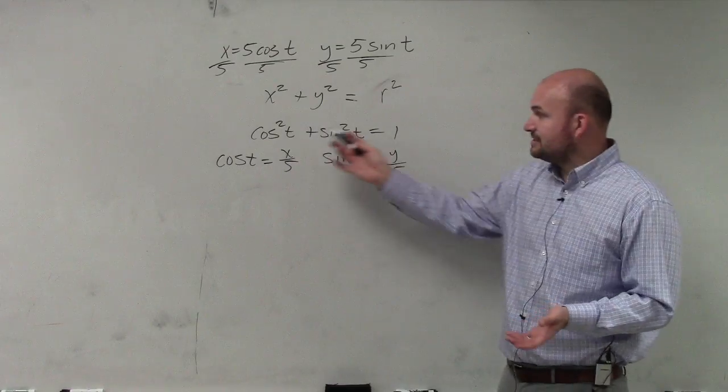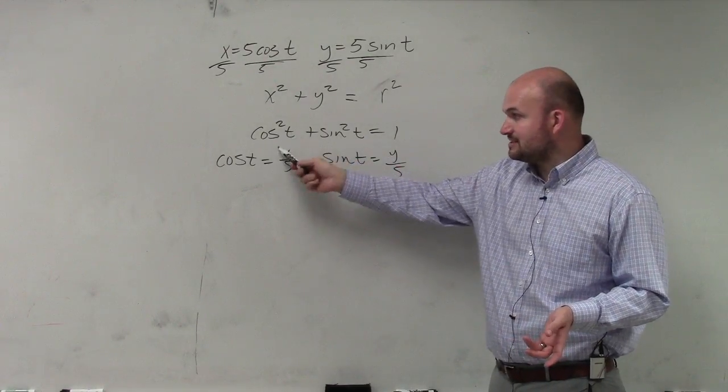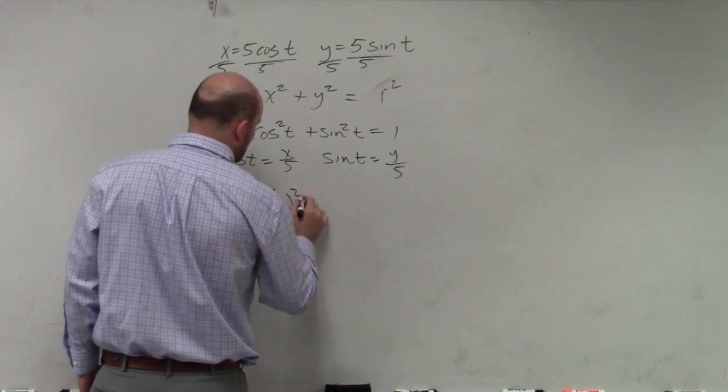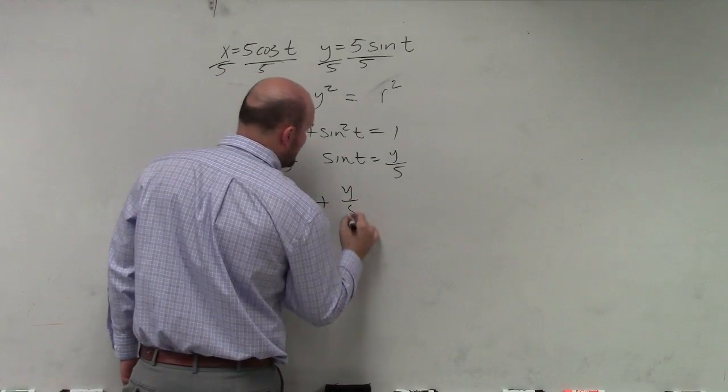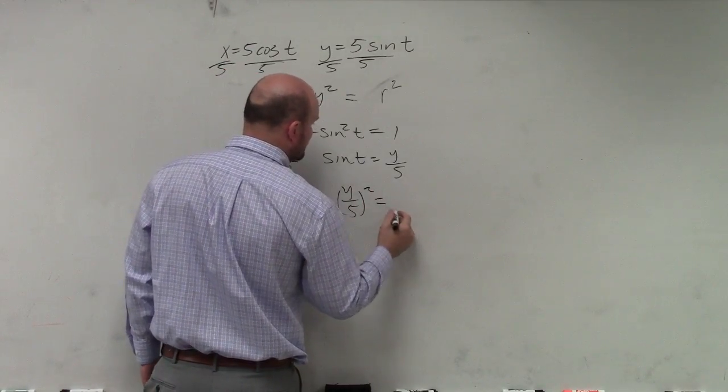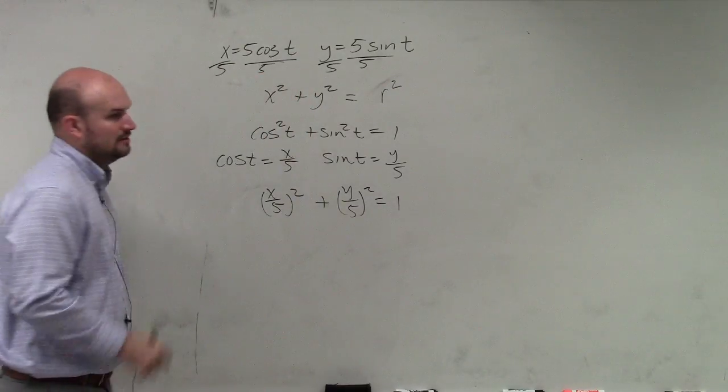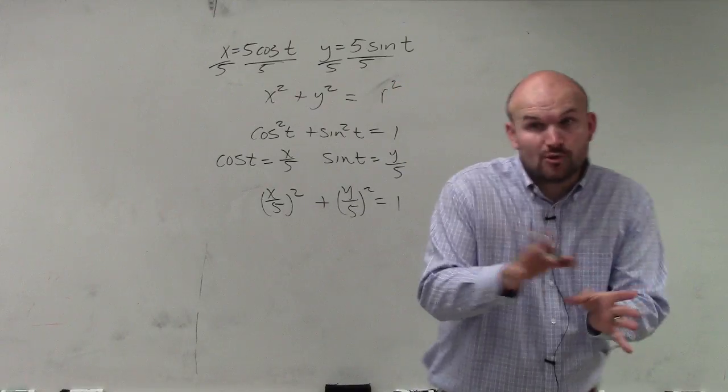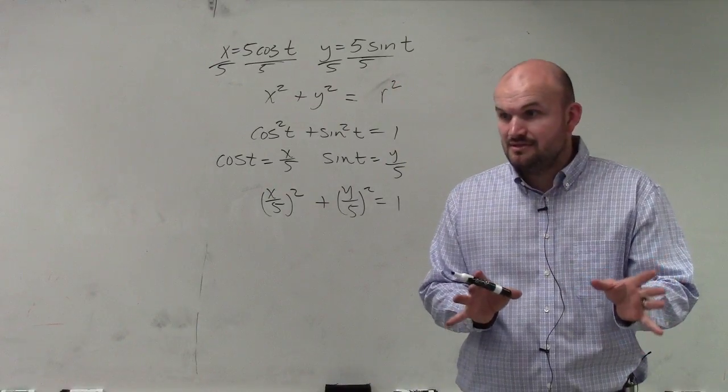So if I want to plug in what cosine of t is, well, that's x over 5. So that's simply x over 5 squared, plus y over 5 squared, equals 1. Now do I have an equation that only has x's and y's, and no more t's and sines and cosines? Yes.